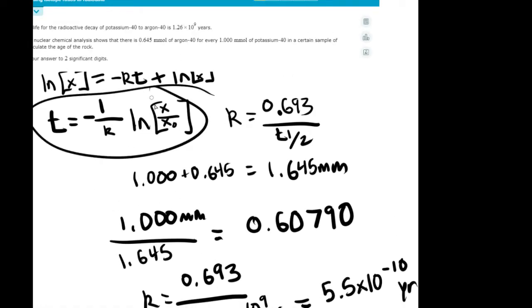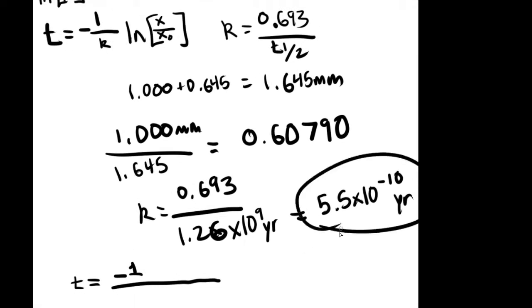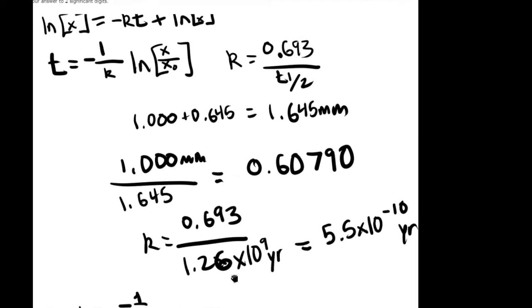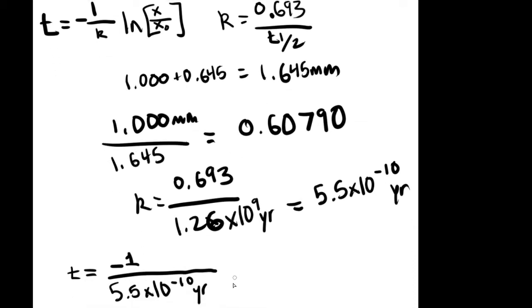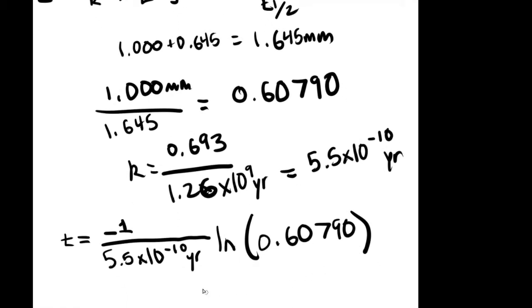Now you can solve the initial equation. So T equals negative 1 divided by the K constant, which is 5.5 times 10 to the negative 10 per year, times the ln of 0.60790.